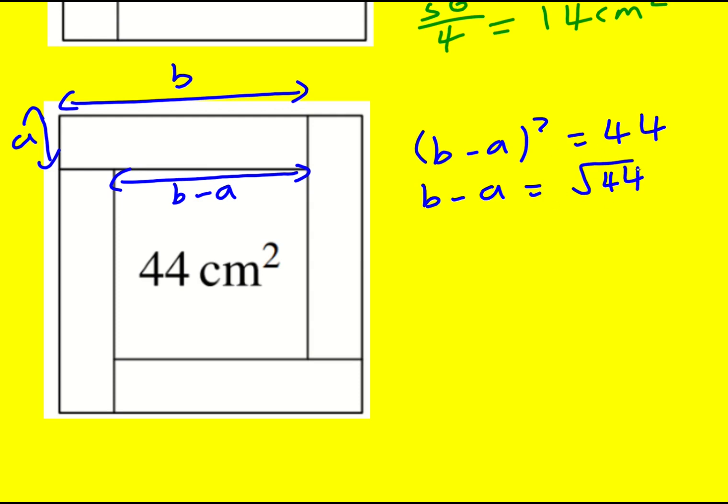Okay, this is called a surd. It's a square root that can't be simplified. Well, sorry, it doesn't have an exact answer. So it's a surd, although I can write it as root 4 times 11 and then use some rules of surds, which I'm not going to go into detail with, but write it as 2 root 11. They're actually the same thing. So B minus A is 2 root 11.